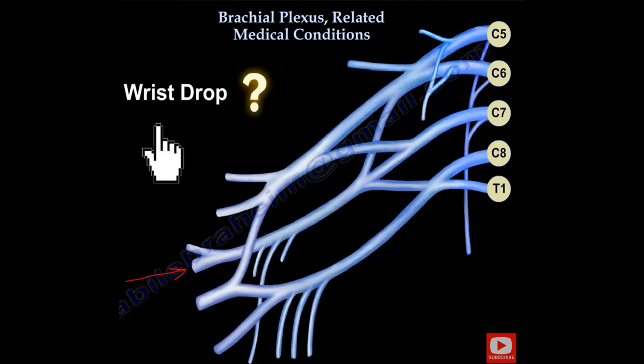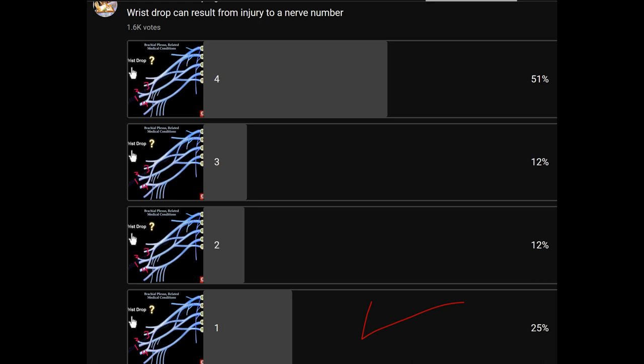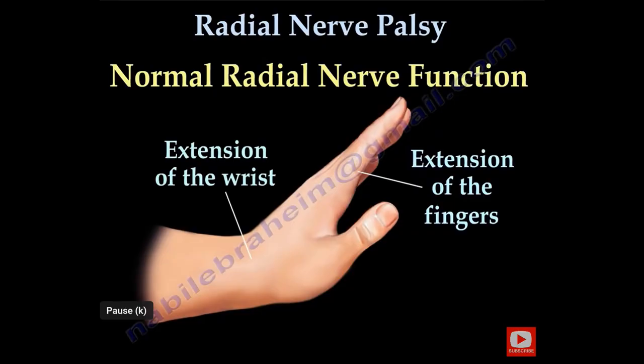Wrist drop occurs when the radial nerve is affected. You can see the radial nerve marked by the red arrow — it comes from the posterior cord. When asked which nerve causes wrist drop, the answer should be number one, the radial nerve, not number four. Number four is the median nerve, which is the one in the middle with two branches.